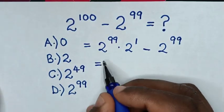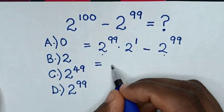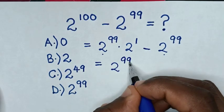So it will be equal to... in here 2^99 is common, so we take 2^99 out of bracket.